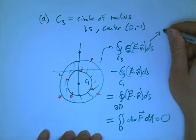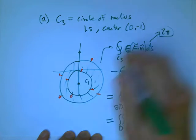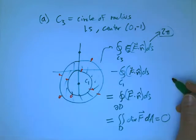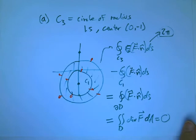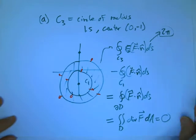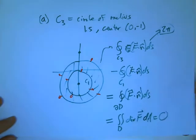So these guys are equal, and therefore this guy is equal to 2π. So the flux out of here was 2π. Okay, so we can do that with all kinds of things.